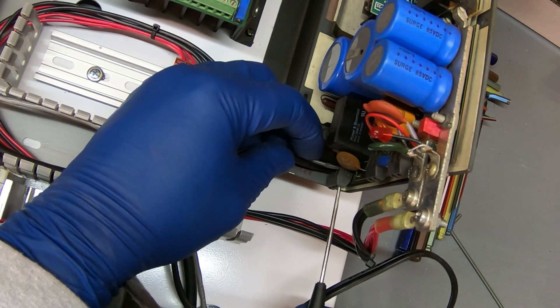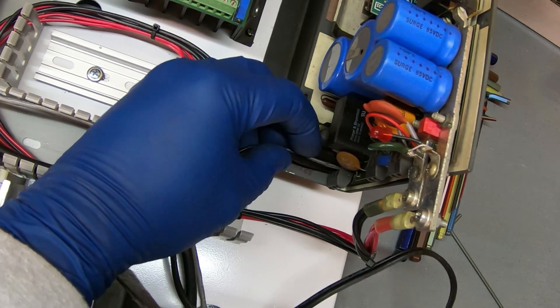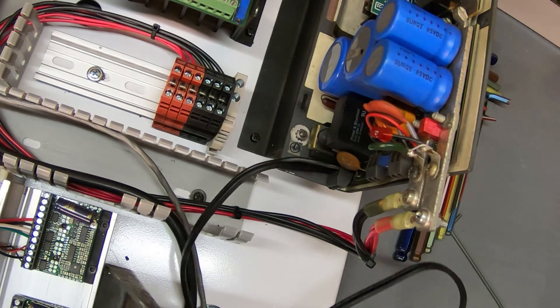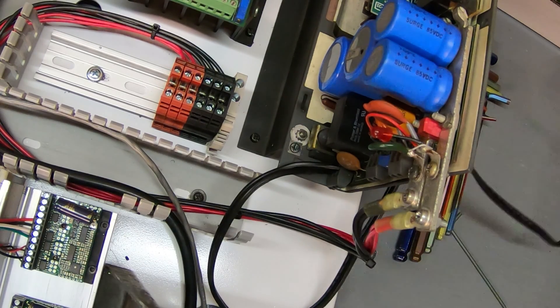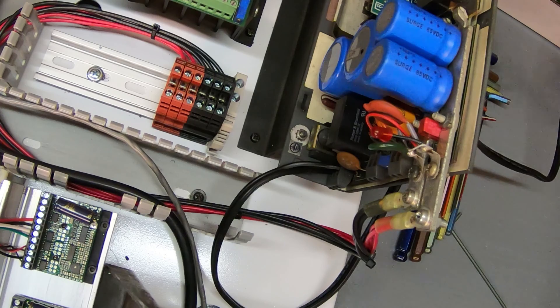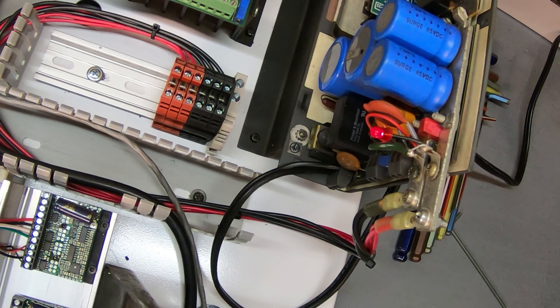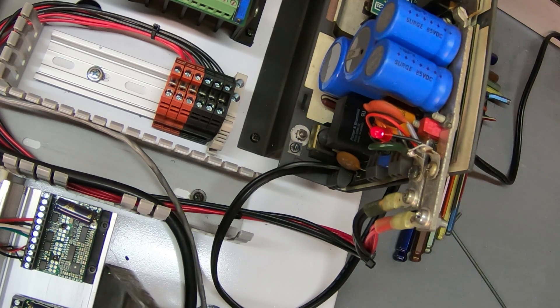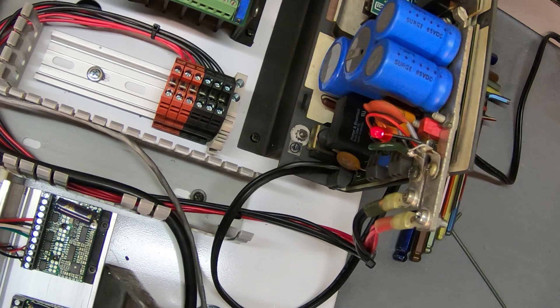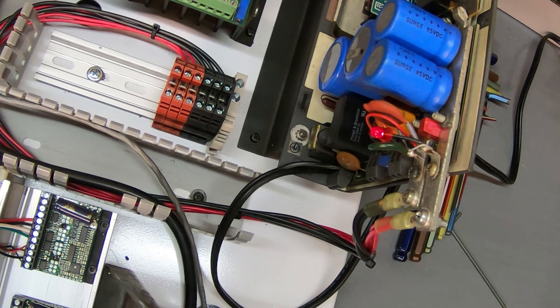And then I'll also be adding the current set resistors. Okay, let's plug that in and see what happens. Okay, nothing blew up. That's a good sign. Let me get a meter and check the voltage coming out of it.